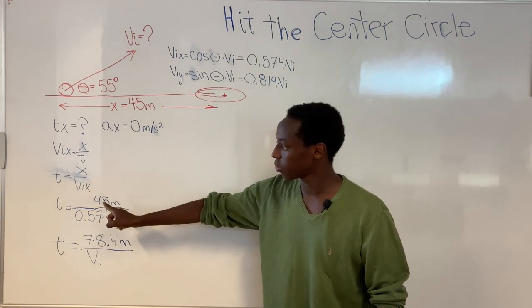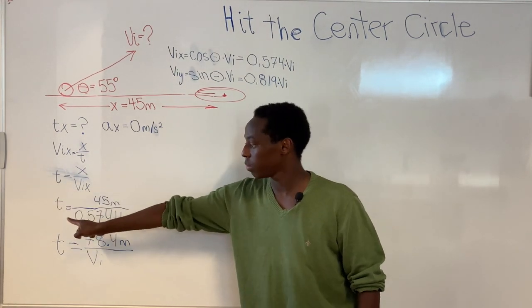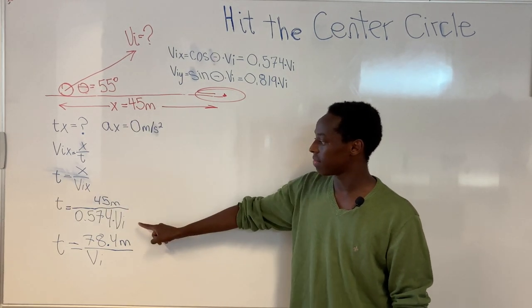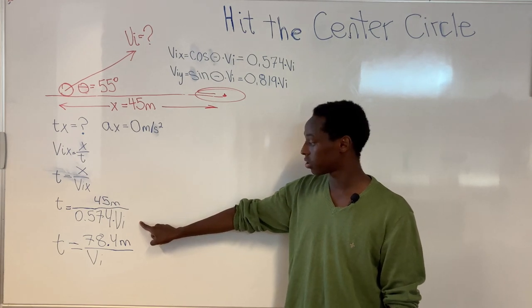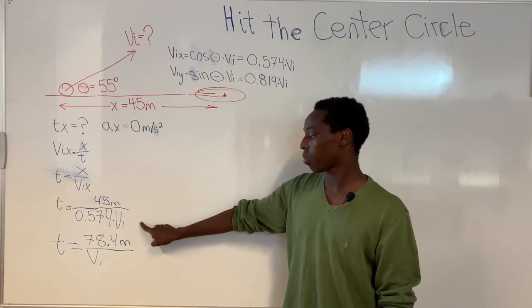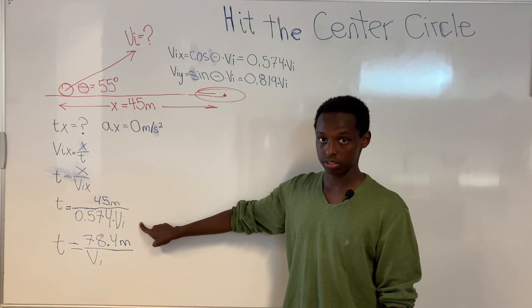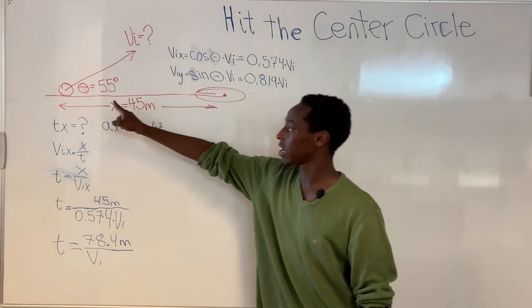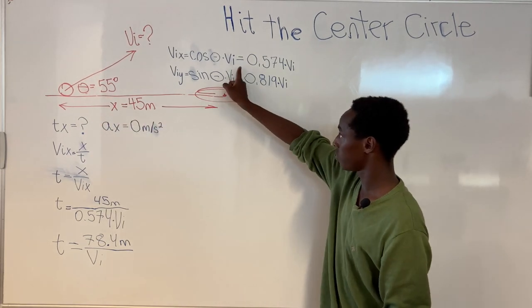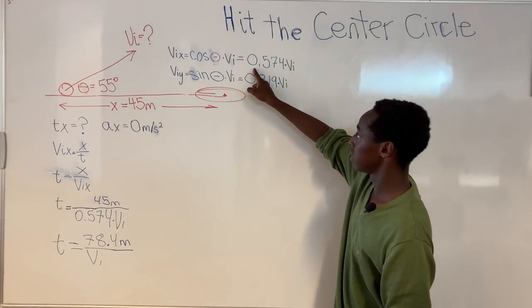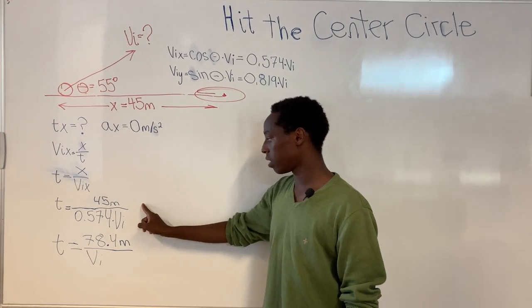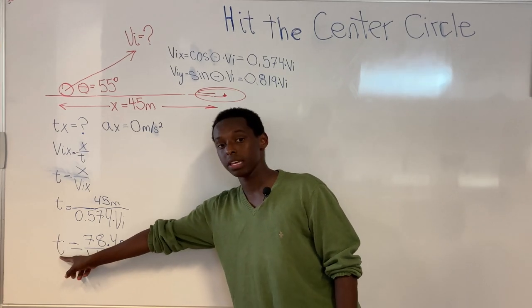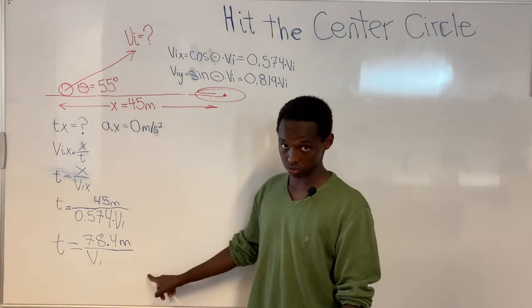We rearrange that equation to get time on one side. The distance is 45 meters, and the initial velocity in the x-direction is 0.574 times the initial velocity. We got that from the cosine of 55 degrees times the initial velocity. When we simplify this equation, we get time equals 78.4 meters over the initial velocity.